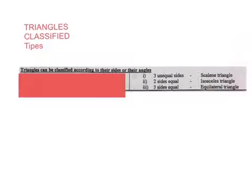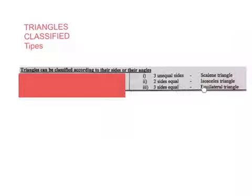If all the sides are unequal, we're going to call it a scalene triangle. If two sides are equal, we're going to call it an isosceles triangle. And if three sides are equal, we're going to call it an equilateral triangle.